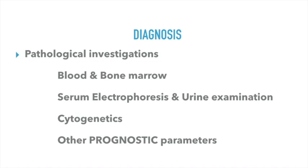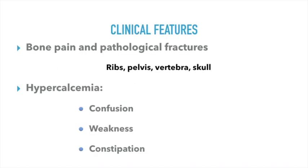Interleukin-6 is also measured for prognostic evaluation. As discussed previously, due to interleukin-6-mediated activation of RANK and RANKL interactions, there is increased osteoclastic activity which makes the bones weaker and causes punched-out lesions. Patients present with bone pain and pathological fractures, commonly of the axial skeleton, along with features of hypercalcemia.